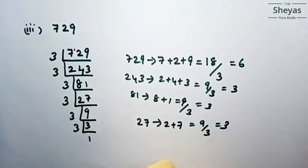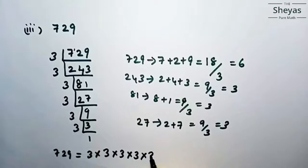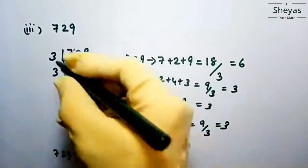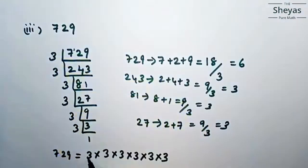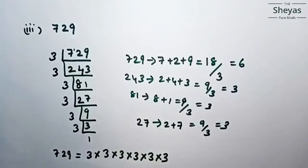So 729 can be written as a product of its prime factors: 3 × 3 × 3 × 3 × 3 × 3 — that is six 3s. So 729 expressed as a product of its prime factors is 3⁶. We have now completed all 3 problems.